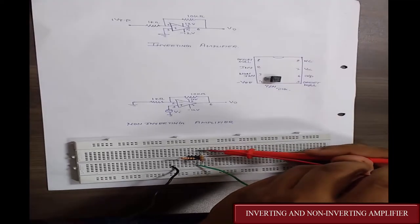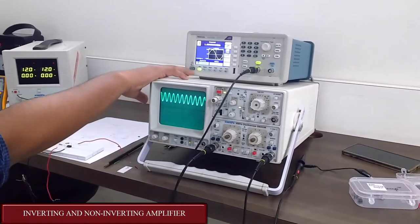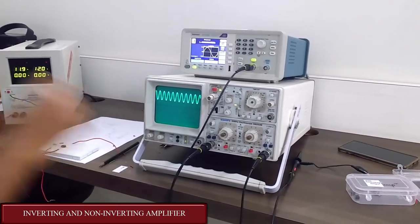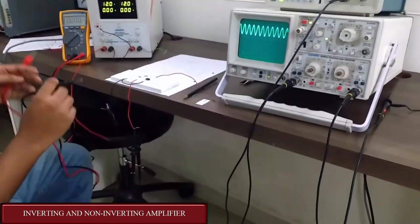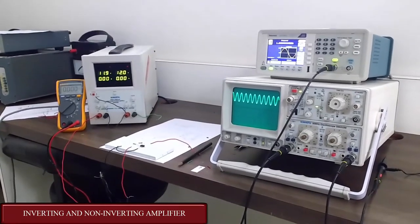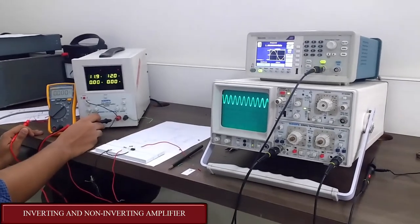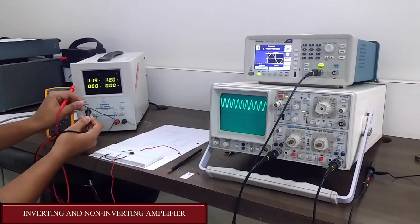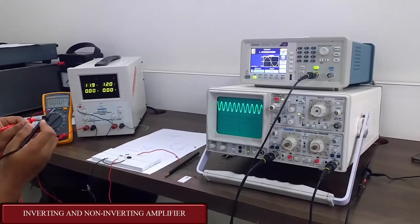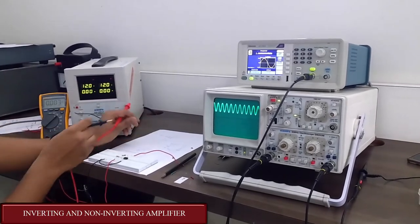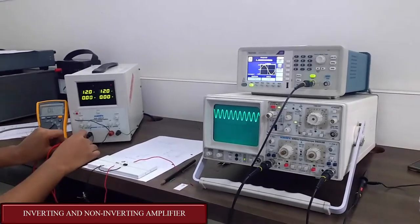The function generator with a frequency of 1KHz and a voltage of 100mV peak to peak is used as the input, connected at pin 2 because it is an inverting amplifier. The op-amp requires a dual power supply, so the negative terminal is connected with a positive terminal — this acts as ground. The positive supply is set to 12V, so this is plus 12V and this is minus 12V. You can see the multimeter — this is the ground and this is the voltage applied.